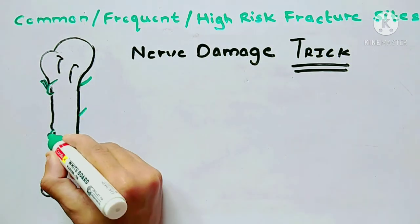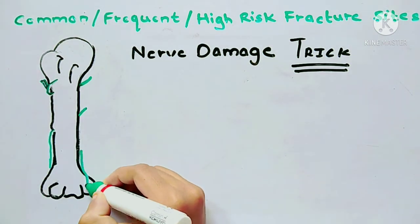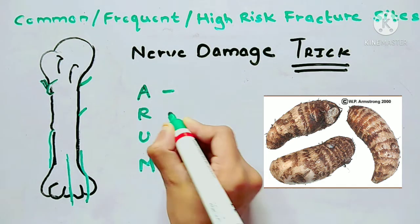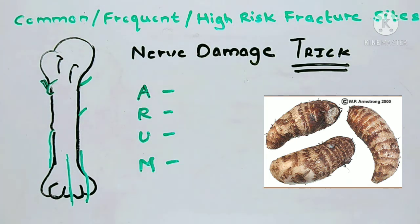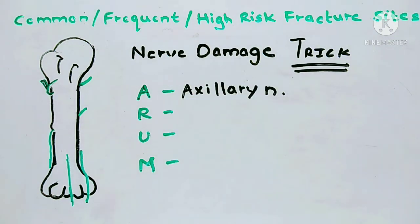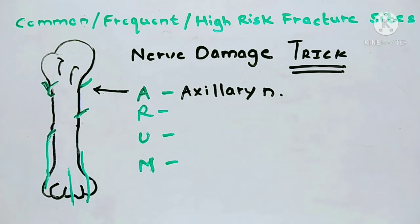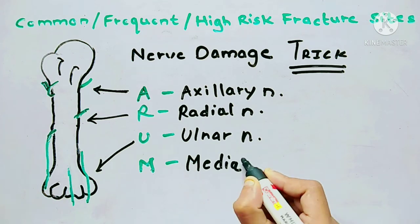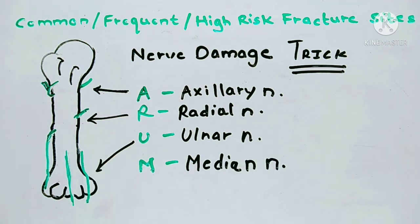Now let's summarize the nerve damage using a mnemonic trick. The trick is ARUM — a vegetable. A stands for the axillary nerve, R stands for the radial nerve, U stands for the ulnar nerve, and M stands for the median nerve, which is in the middle.